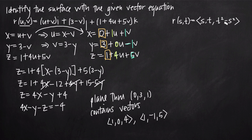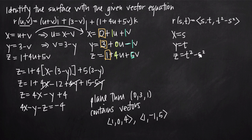We do the same thing: find parametric equations of the surface by pulling out each component. So x equals s, y equals t, and z equals t squared minus s squared. We want to eliminate the parameters s and t. These are easier because x equals s and y equals t directly. So we substitute: z equals y squared minus x squared.